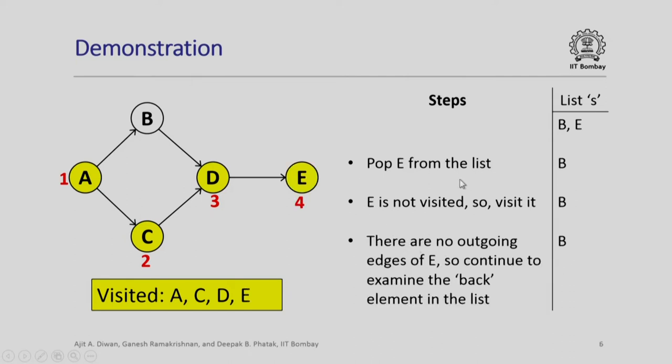Next, we pop E from the list because E is at this position. The list now contains only B. Since E is not visited, we visit it. Of course, there is no outgoing edge from E, so there is nothing else to be done. Since there is nothing else to be done, we have to continue to examine the back element of the list. The only element on the list that is remaining now is B. So we will now have to visit B.